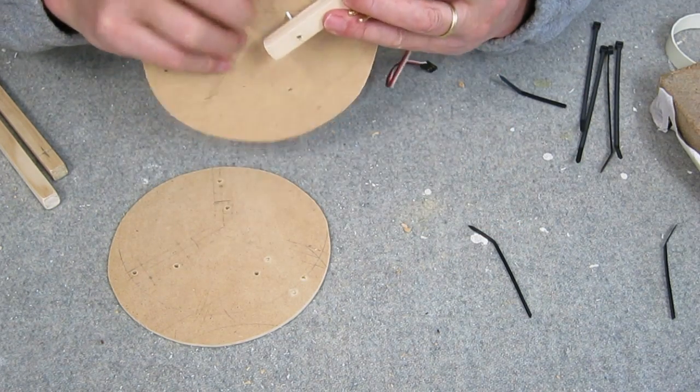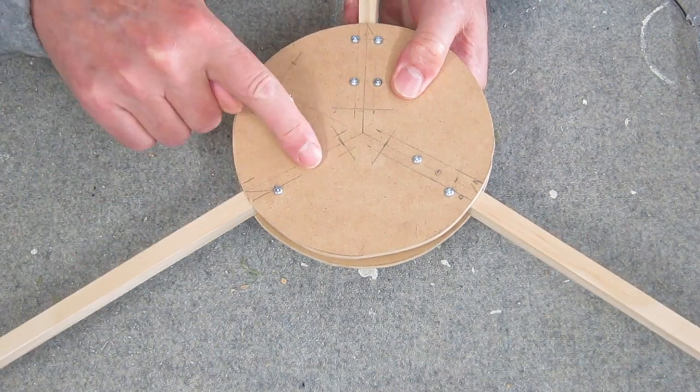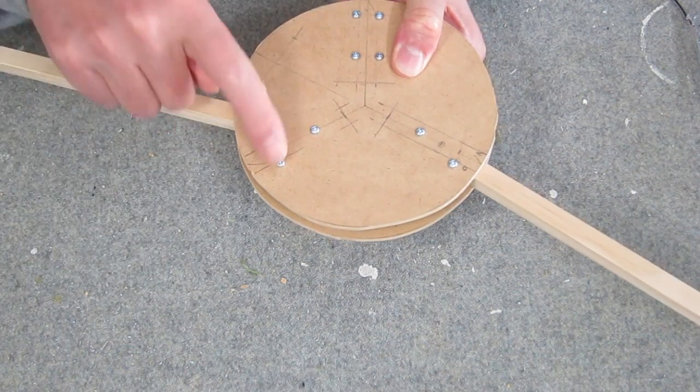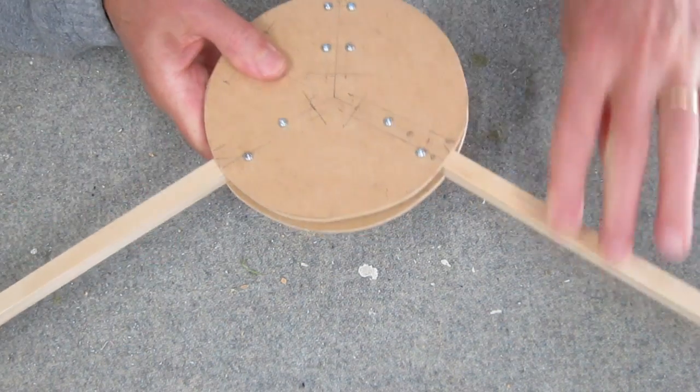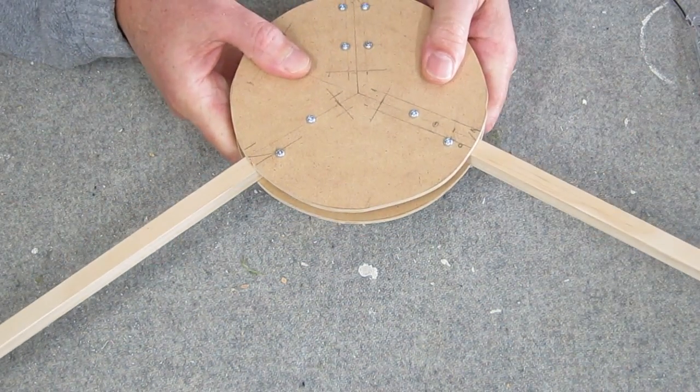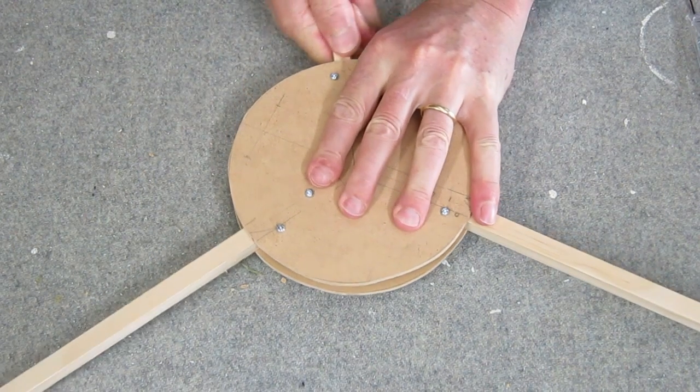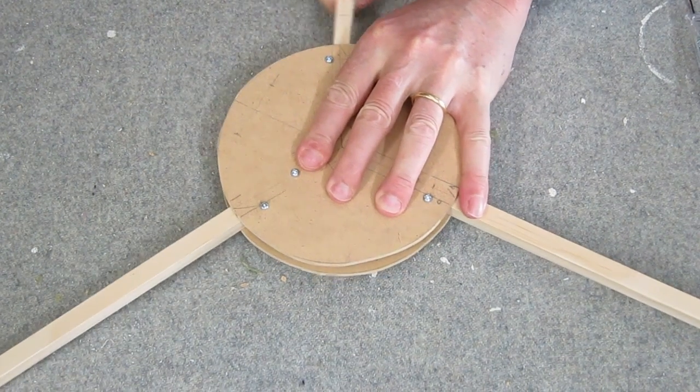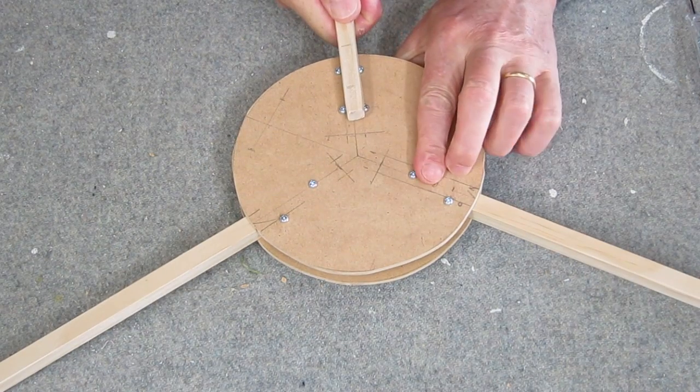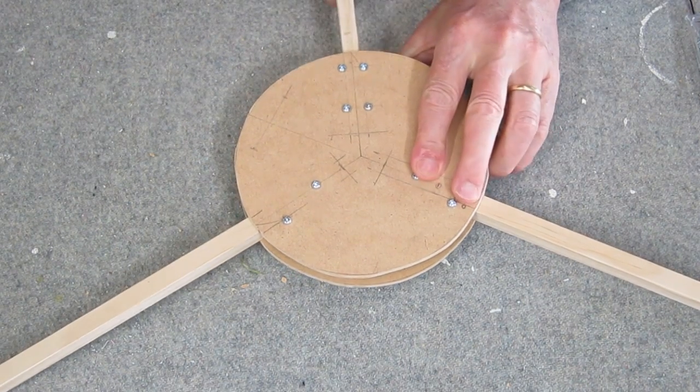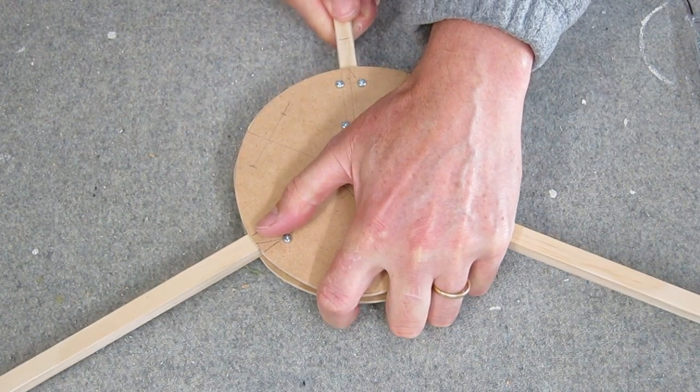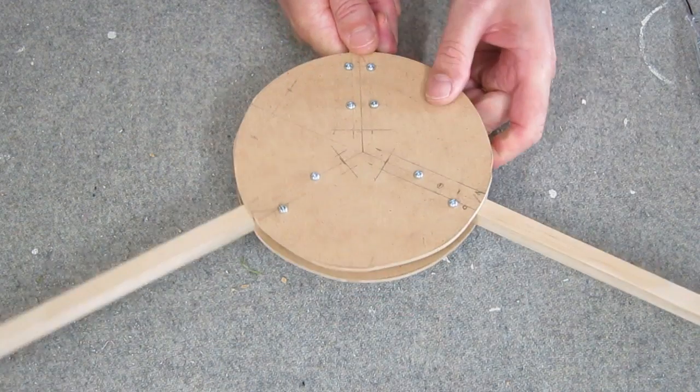Now it's time to bolt the arms onto the body. The front 2 arms pivot on that inner bolt and butt up against the outer bolt, and the rear arm is just clamped between those 4 bolts. The idea behind this setup is that the front arms will pivot back in the event of a crash, preventing any major damage hopefully.